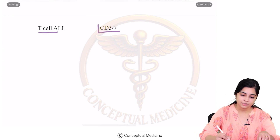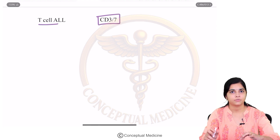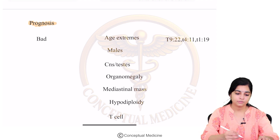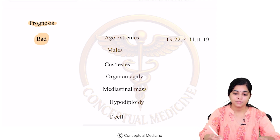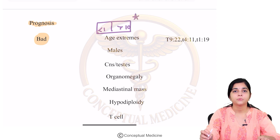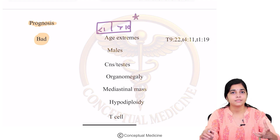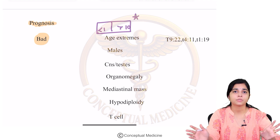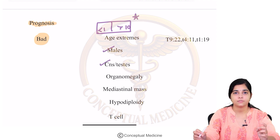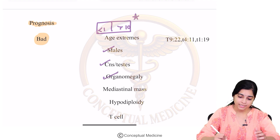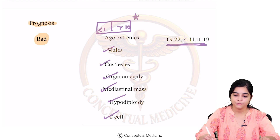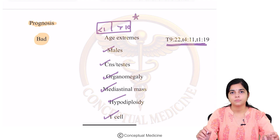For T-cell ALL, the two markers to remember are CD3 and CD7 positivity. Regarding poor prognostic markers: age less than 1 or more than 10 years, male sex, CNS or testicular involvement, organomegaly, mediastinal mass, hypodiploidy, T-cell ALL subtype, and chromosomal translocations t(9;22), t(14;11), and t(11;19) are all associated with poor prognosis.